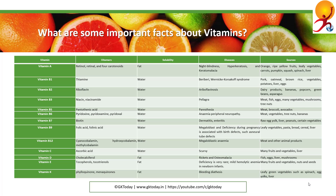Vitamin B3 vitamins are niacin and niacinamide. It is soluble in water. Deficiency can cause pellagra and it can be found in meat, fish, eggs, many vegetables, mushrooms, and tree nuts.